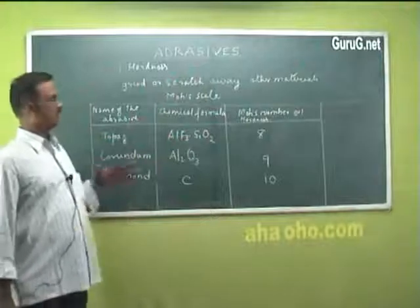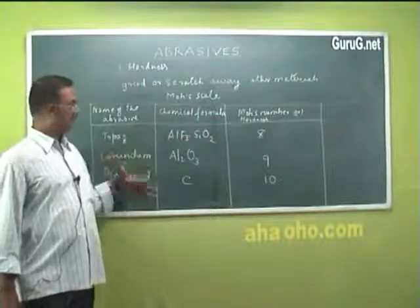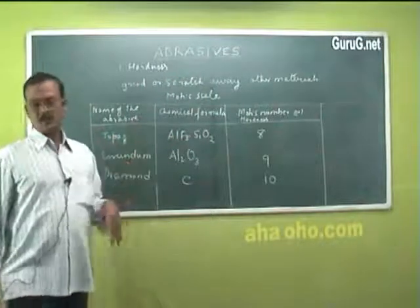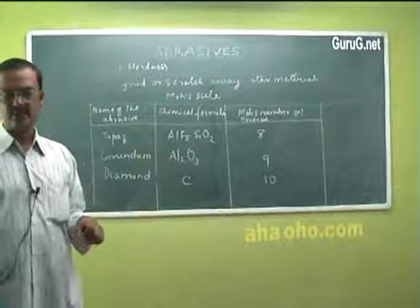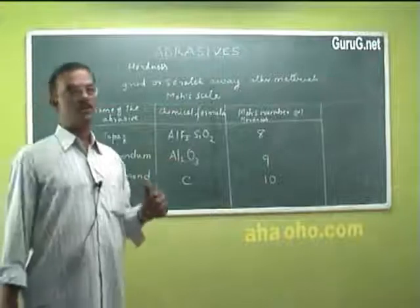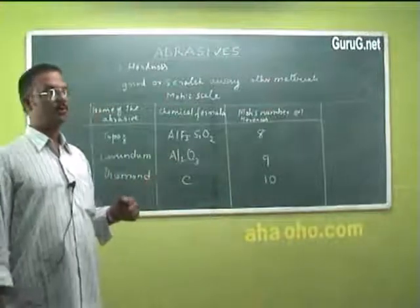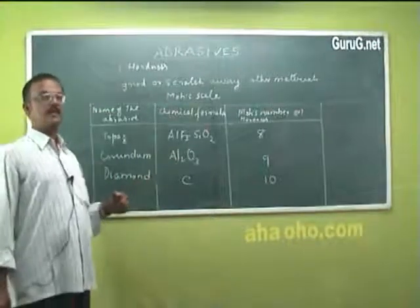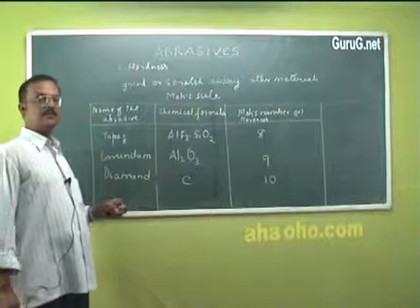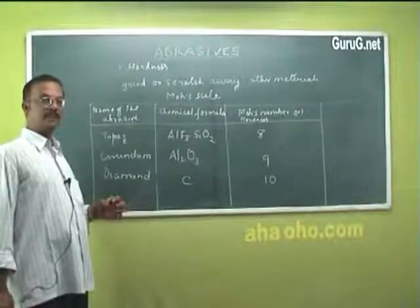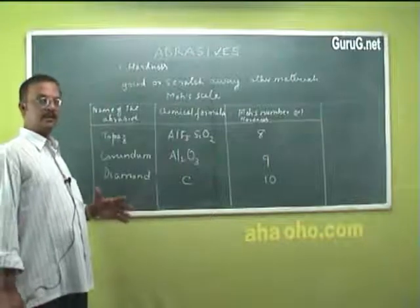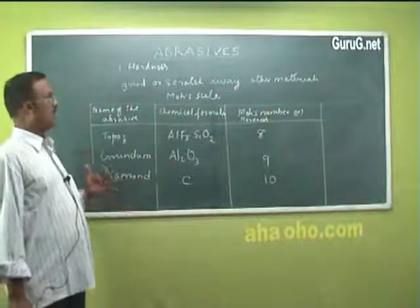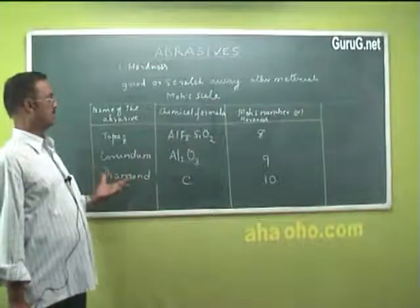Of these abrasives, those having values from 1 to 4 are known as soft abrasives, and those having values of 5 and above are called hard abrasives.